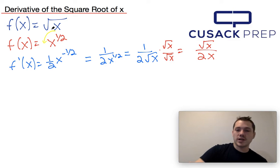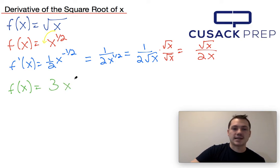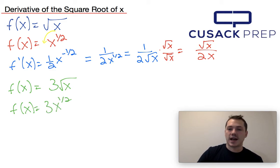We'll do one more example here, one where there's a coefficient. So maybe f of x is equal to 3 times the square root of x. Then recall that f of x, this is the same as 3 times x to the 1 half.